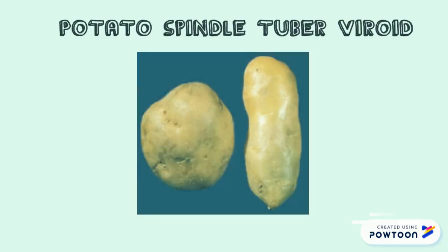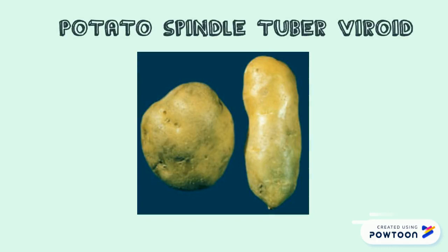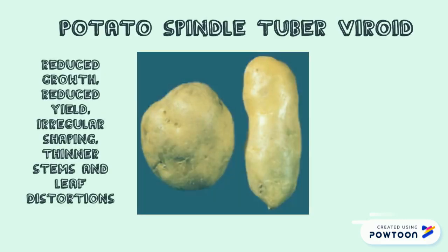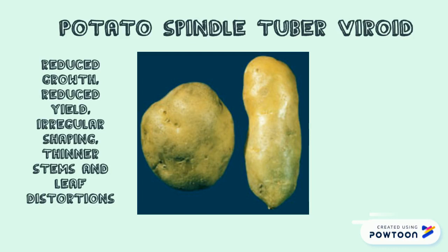One of these diseases is the potato spindle tuber viroid, or PSTVD. It's a virus and its main target is potato tubers. It acts just like a normal virus does, infecting and/or hijacking various cells in order to reproduce. From this, it can cause reduced growth, reduced yield, irregular shaping, thinner stems and leaf distortions.